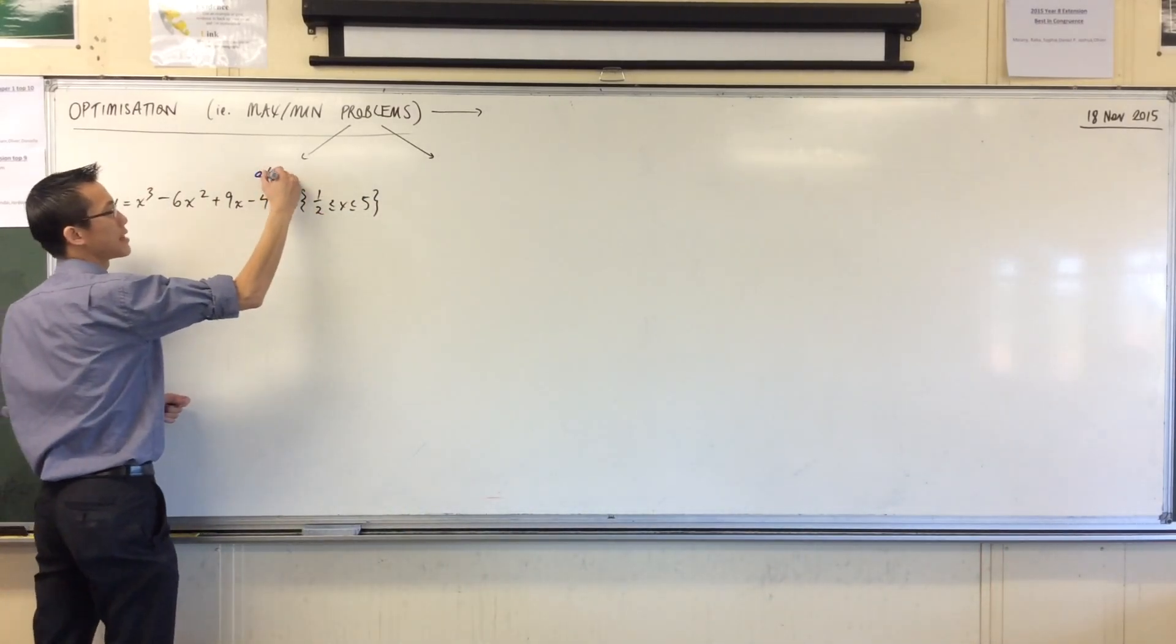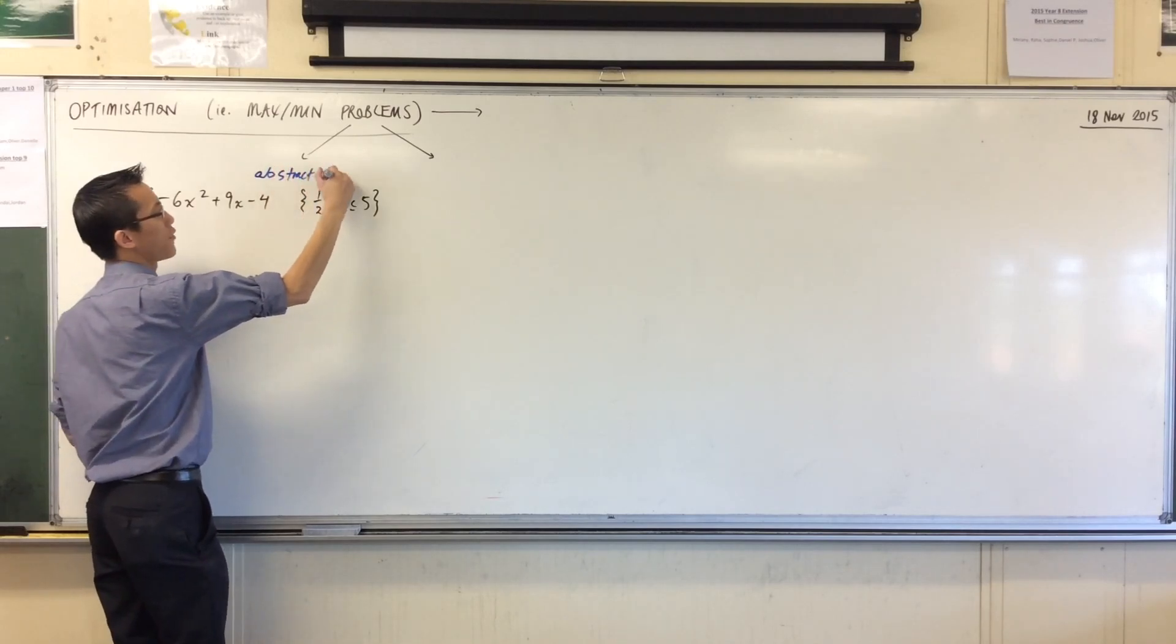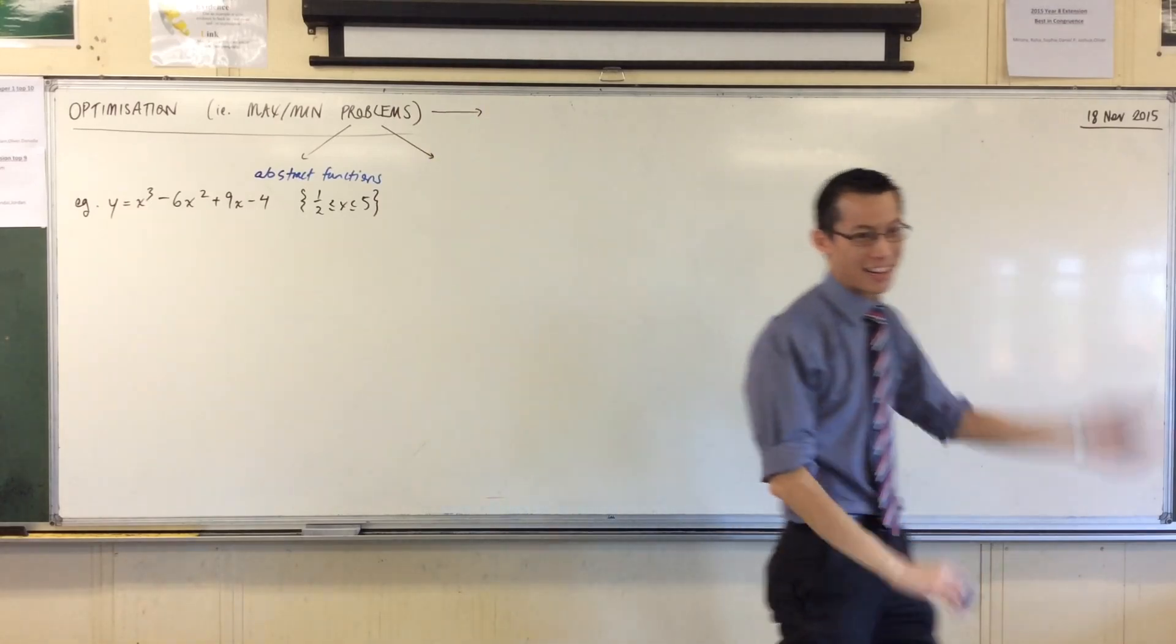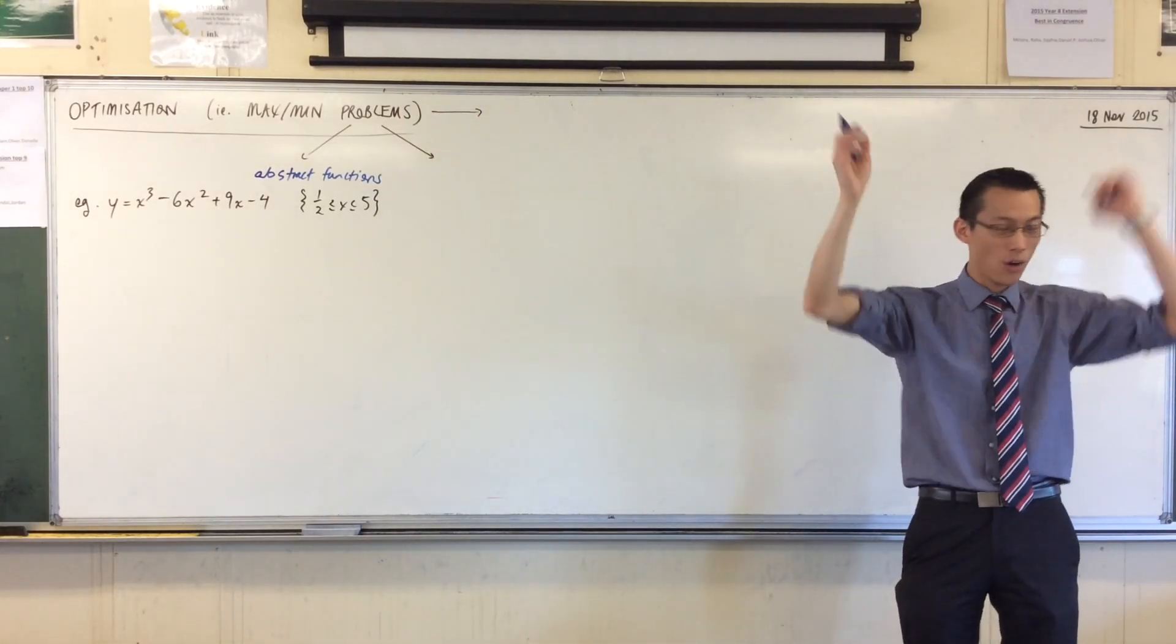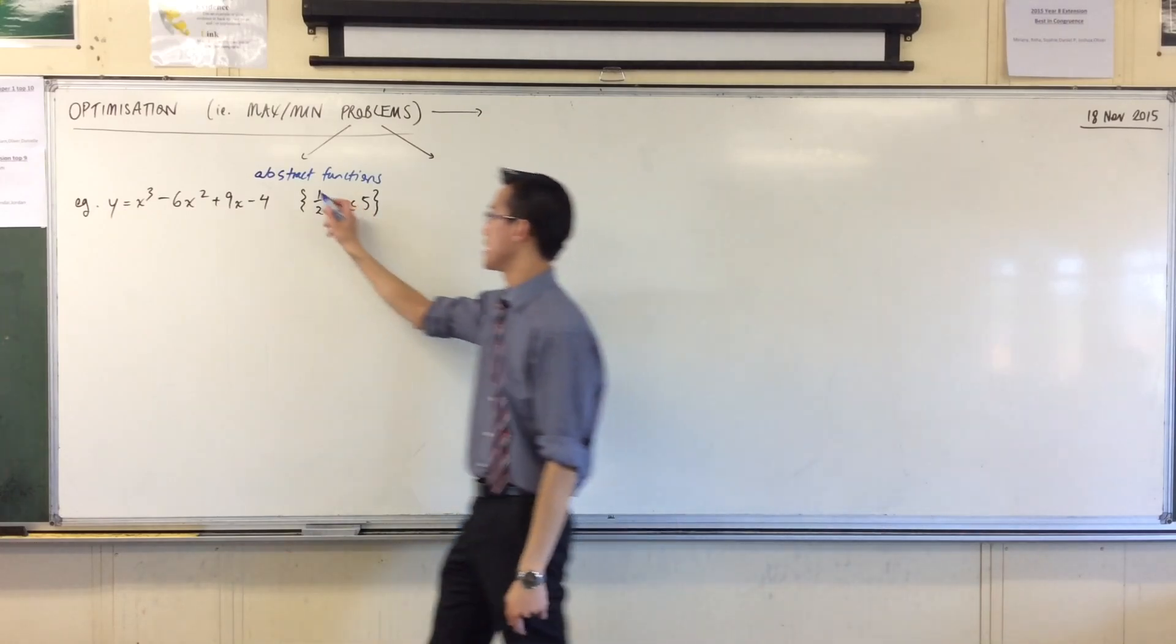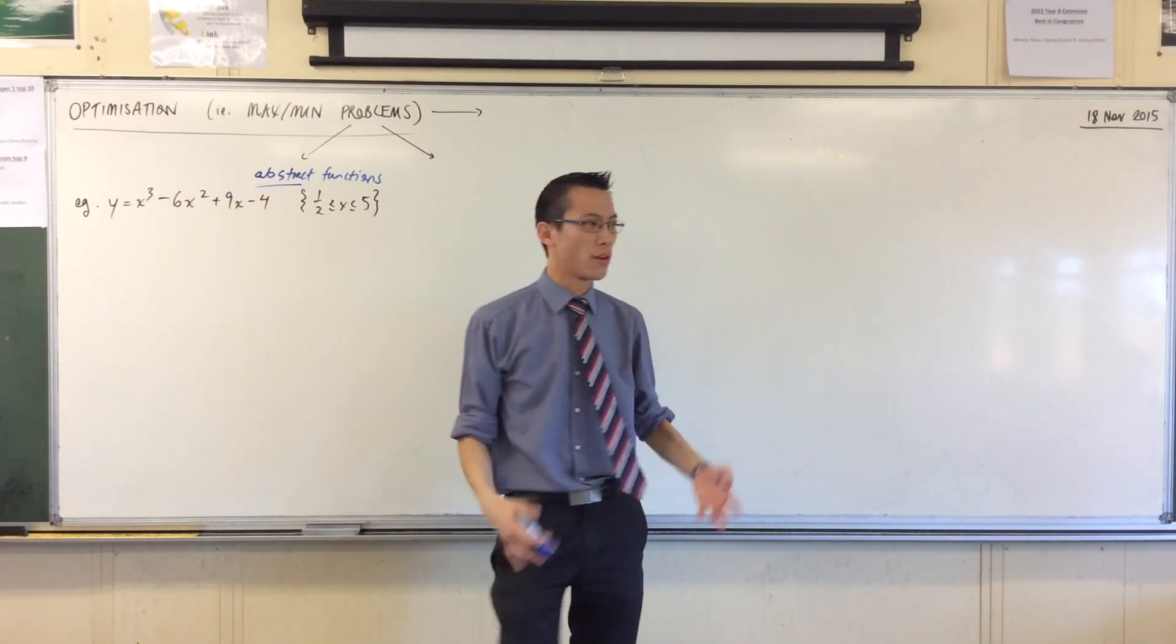The first one, and it's the example I've got on the board right now, is just abstract functions which have nothing to do with anything in real life. It's just x's and y's, and I just want to find the biggest y or the lowest y. That's all I'm after. Abstract functions, abstract meaning it has nothing to do with any context. You look at this, there's no context. I just want to find some numbers.